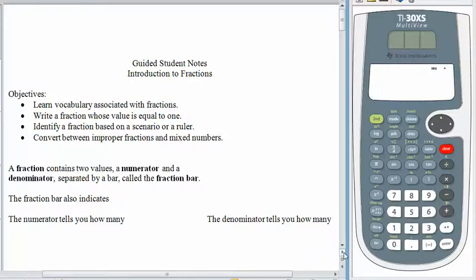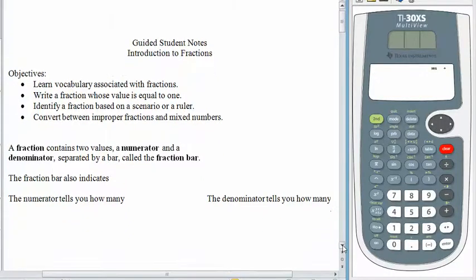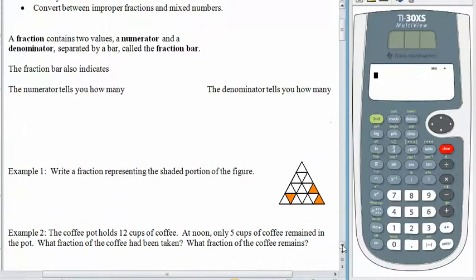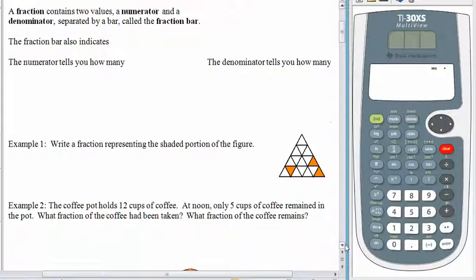As usual, the first thing we want to do is talk about vocabulary. A fraction contains two values. We have a numerator and a denominator. We've talked about those before. They're separated by the fraction bar, which indicates division.